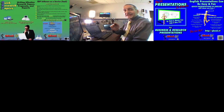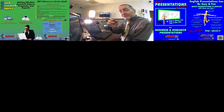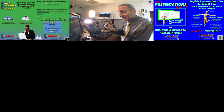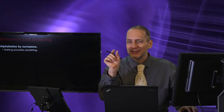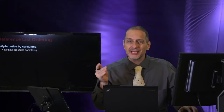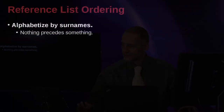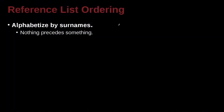A key point to remember is that nothing precedes something. That means if you have a letter and then nothing, and then you have a letter and an A, then nothing is before the A. Nothing comes before something. It's a little bit confusing, but just adopt the idea. Sometimes you have an empty space, or a word that comes to an end and another word that is a longer word. For example, if I have an author name of ABC and another of AB, the AB goes first because this last bit is nothing, and nothing precedes something.